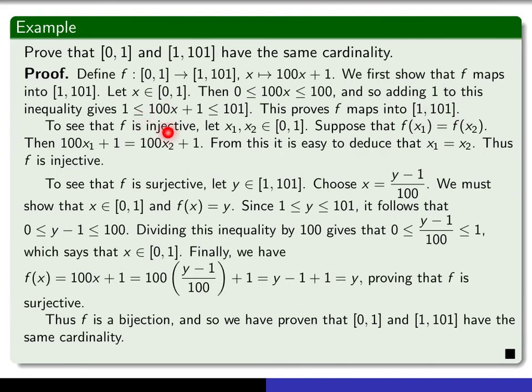To see that it's injective, you give yourself two elements of your domain. You assume that the f values are the same, which means 100x₁ plus 1 equals 100x₂ plus 1. And then it's easy to deduce that x₁ equals x₂ by subtracting 1s and then dividing by 100. So that proves that f is injective.